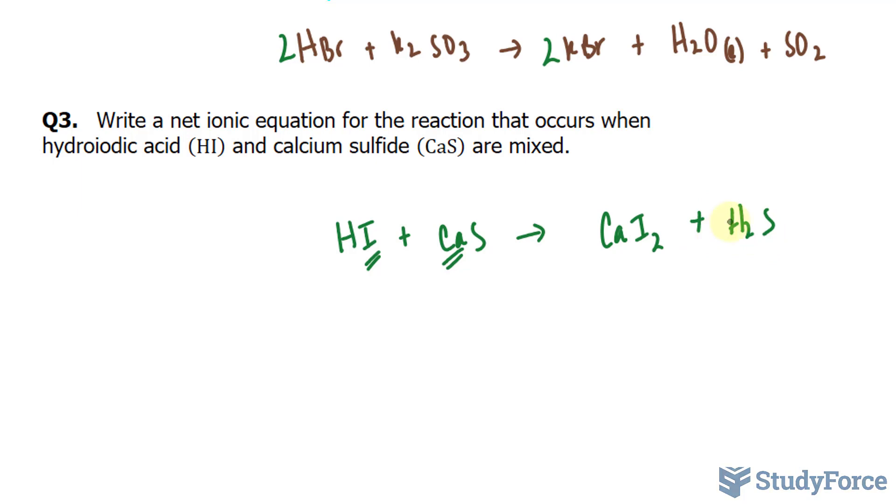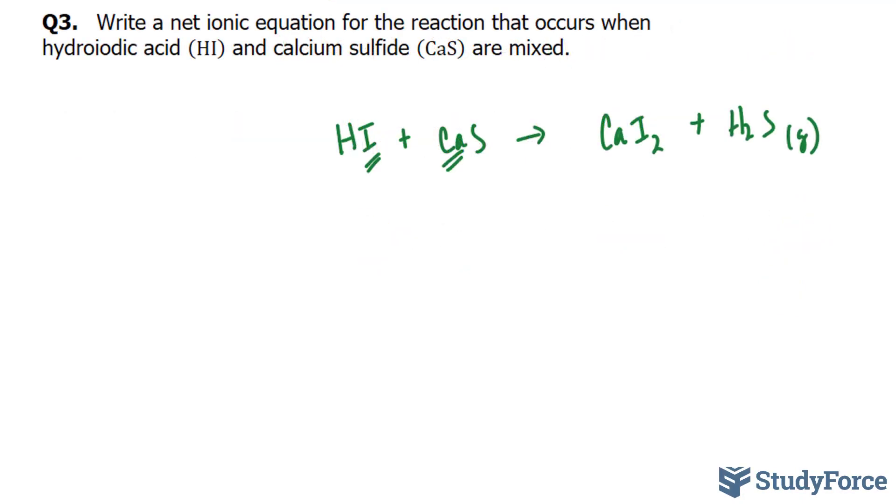Now, at this point, you're probably wondering what gas is formed. Like in questions 1 and 2, we figured out what the gases were, but over here, H2S is a gas. So, keep that in mind when we produce the net ionic equation. Now, we balance our molecular equation before we break this down. This becomes 2HI, because that balances out the hydrogens and the iodines, and we're done balancing.